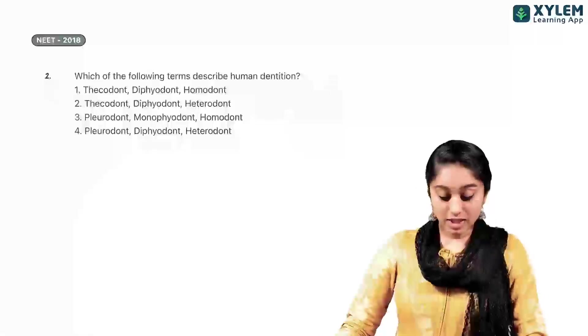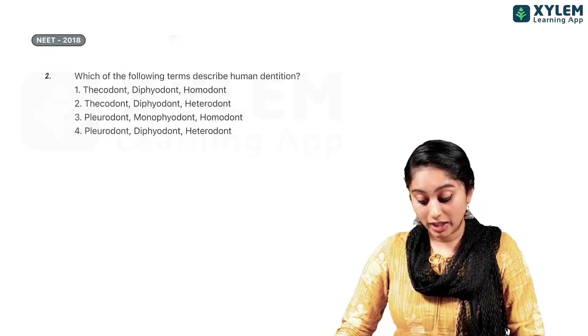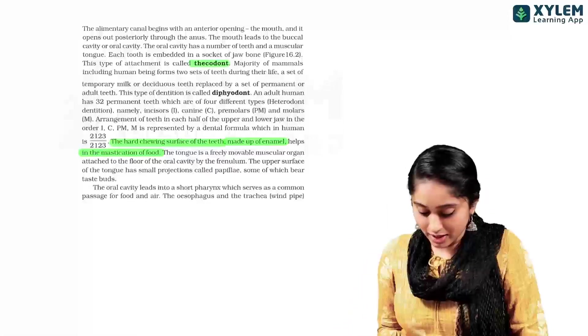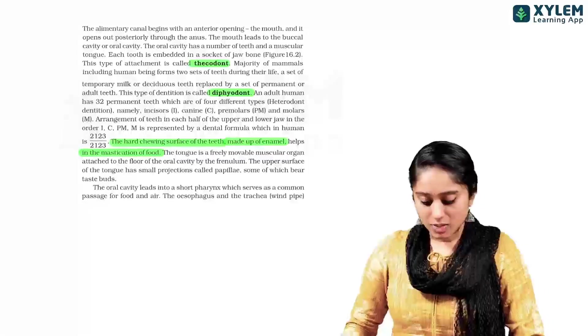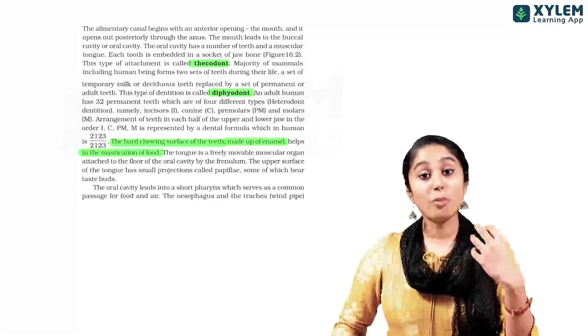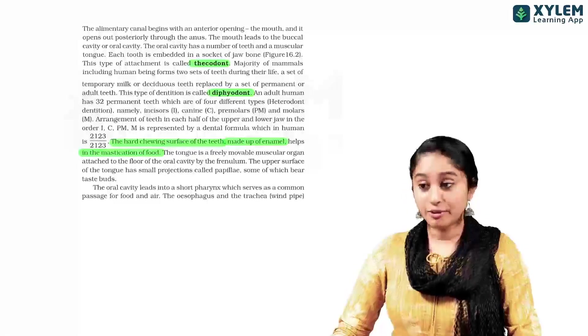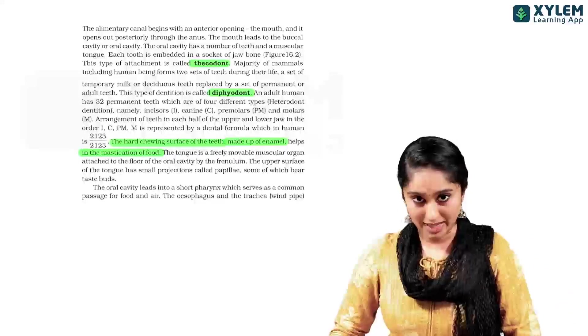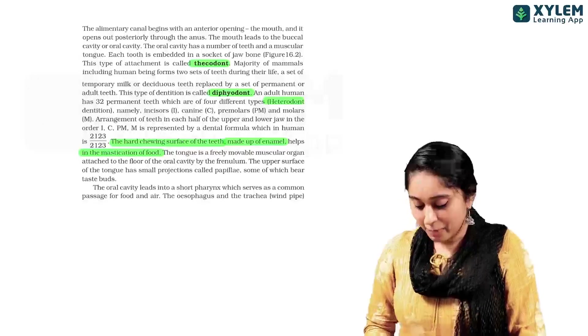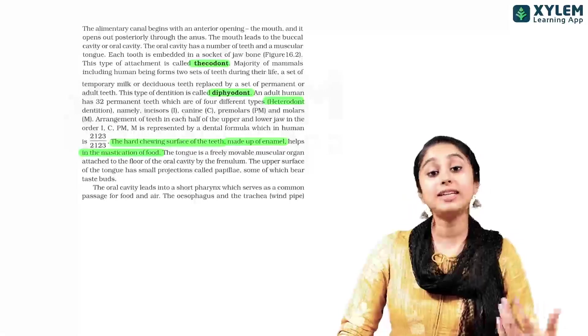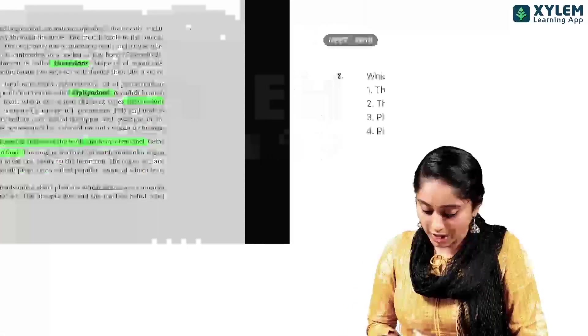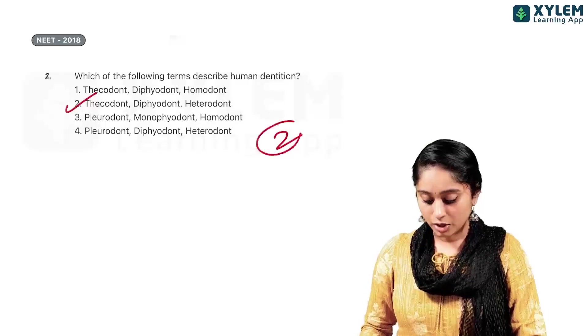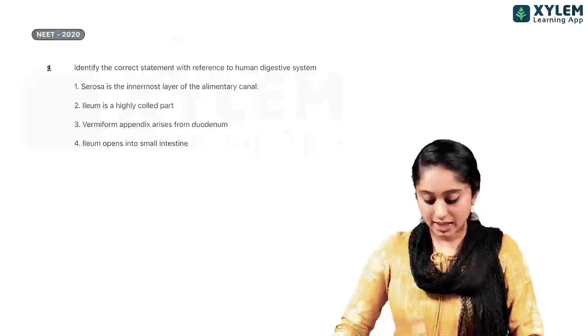Okay? Now, moving to the next question. This is NEET 2018. Which of the following terms describe human dentition? Again, you see NCERT already made bold two terms. One is Thecodont - jaw bone has teeth directly attached, and Diphyodont. Diphyodont has two sets of teeth. There is milk teeth and we have permanent teeth. Now, there is something called heterodont. We have different types of teeth. So, the right answer here would be Thecodont, Diphyodont and Heterodont. Number 2. Again, clearly from the NCERT directly.